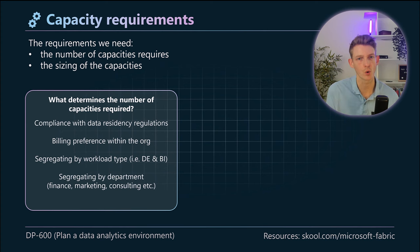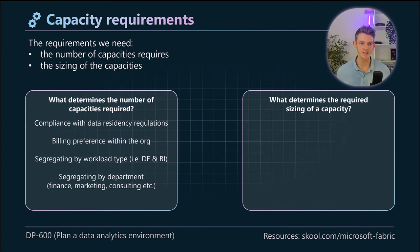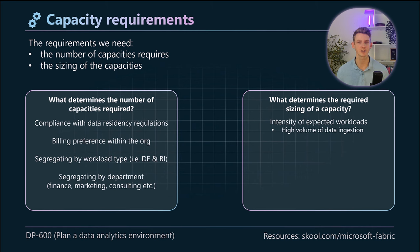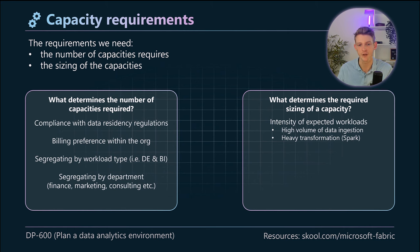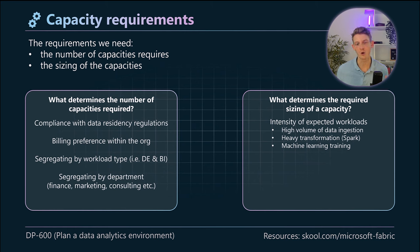What about the sizing? Some of the things that impact the sizing of a capacity are the intensity of expected workloads. Are you going to be doing high volumes of data ingestion — gigabytes or even terabytes into Fabric every day? These use a lot of resources, so a higher capacity helps. Similarly, heavy data transformation in Spark is resource-intensive. If you're doing that regularly, choose a high capacity. Machine learning training can also take hours or days — if that's something you'll do regularly, you want a high capacity for that.